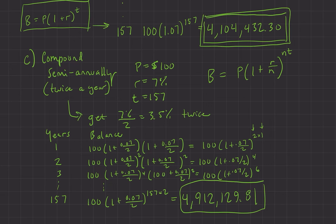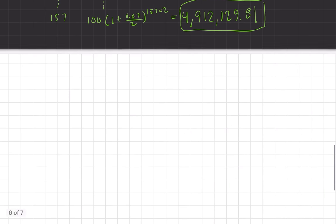This is a pattern we love to look at. The more we compound, the more it goes up. Is there a limit? Because you can compound semi-annually, monthly, daily, every hour, every minute — you can do it instantaneously. So let's go to our last example and look at what happens when you compound infinitely fast.